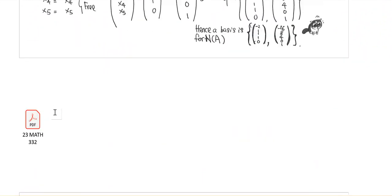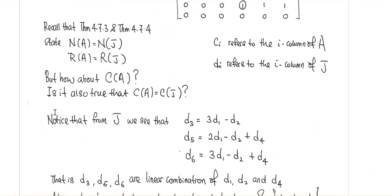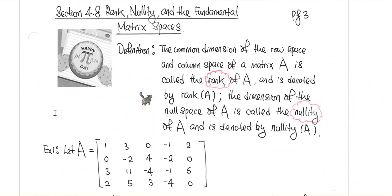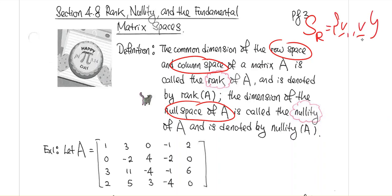Today we are going to concentrate on a new concept in section 4.8. We know row space, column space, and null space are all vector spaces, so they all have bases. The number of vectors in those bases is called the dimension of the vector space. So if the row space has basis v1, v2, we say the dimension of the row space of A is 2, because there are two vectors in the basis.